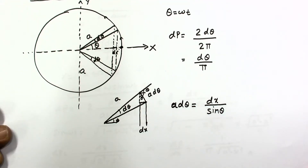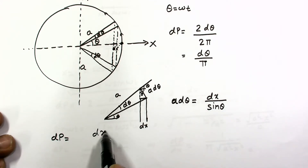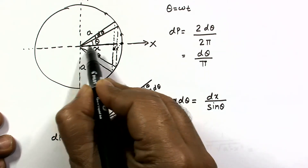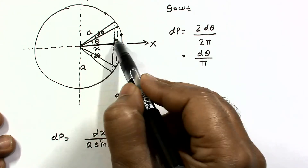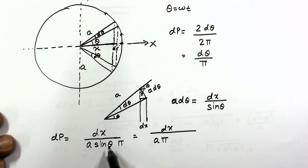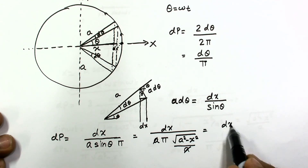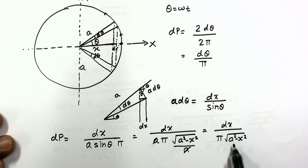Substituting into dp: dθ is dx divided by a·sin(θ), divided by π. From the circular diagram, sin(θ) equals √(a² − x²) divided by a. So dp equals dx divided by a·π times (√(a² − x²)/a), and the a's cancel, giving dp equals dx divided by π·√(a² − x²). Therefore dp/dx equals 1 divided by π·√(a² − x²) — the same result as the first method.